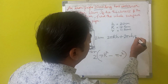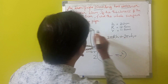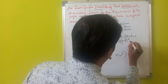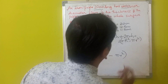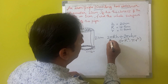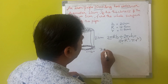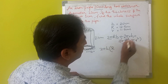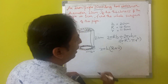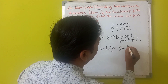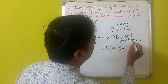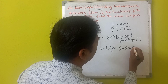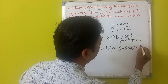Adding all parts, the total surface area is: 2πRh + 2πrh + 2(πR² − πr²). Simplifying, 2π and h are common in the first two terms, giving 2πh(R + r). From the ring terms, taking π common gives π(R² − r²).